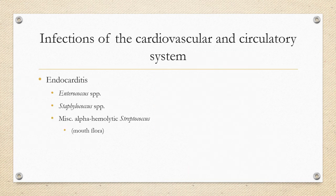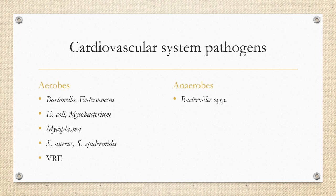Organisms causing cardiovascular and circulatory system infections include Enterococcus, Staphylococcus, and miscellaneous alpha-hemolytic streptococcus — mouth flora that can lead to cardiovascular disease. Aerobic pathogens include Bartonella, Enterococcus, E. coli, Mycobacterium, Mycoplasma, Staph aureus, Staph epidermidis, and vancomycin-resistant enterococcus. The anaerobe Bacteroides, a gram-negative rod, is also significant.